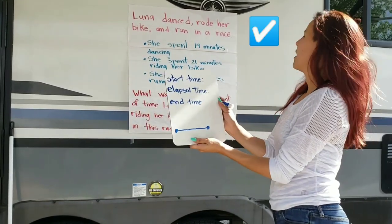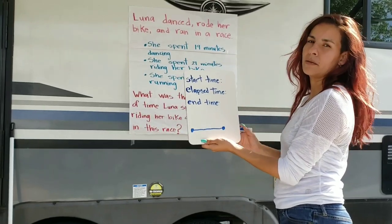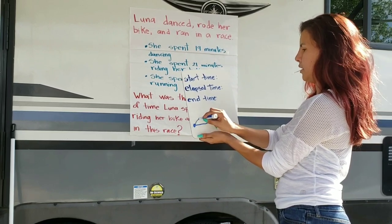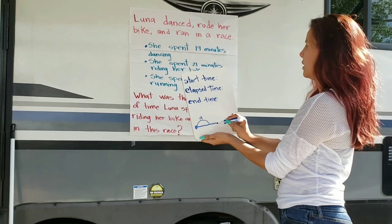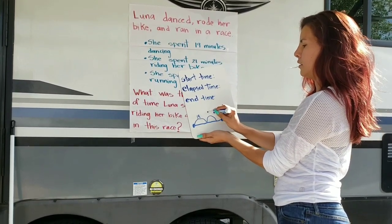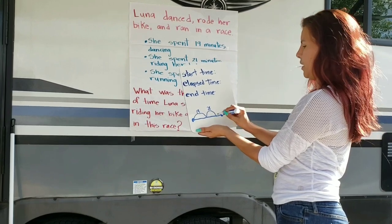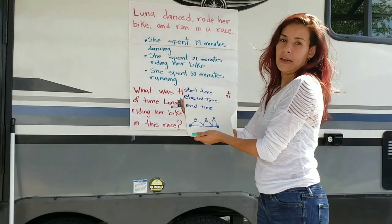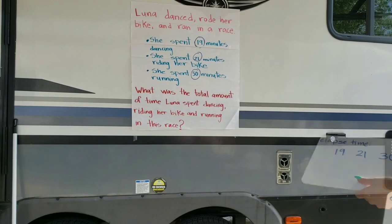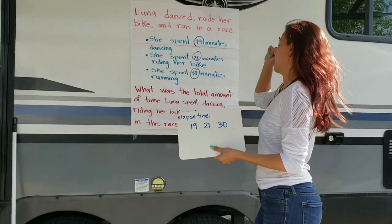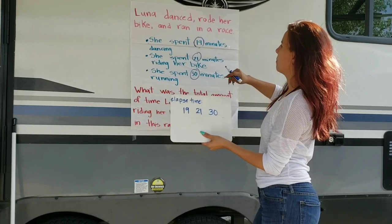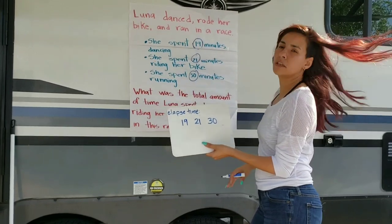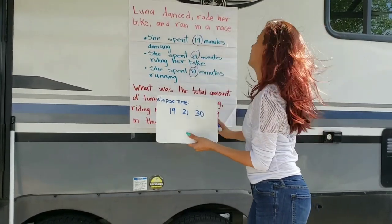It is elapsed time. We have three elapsed times here, right? We have three jumps in this number line. First, 19 minutes. Then, we have 21 minutes. And we have 30 minutes. So, we got to the conclusion that the elapsed times are 19, 21, and 30, because all those activities took her this time in the race.